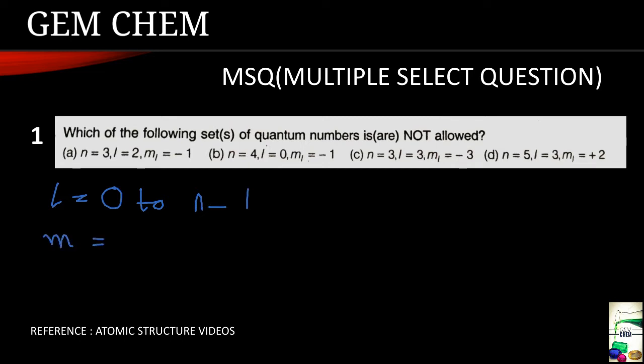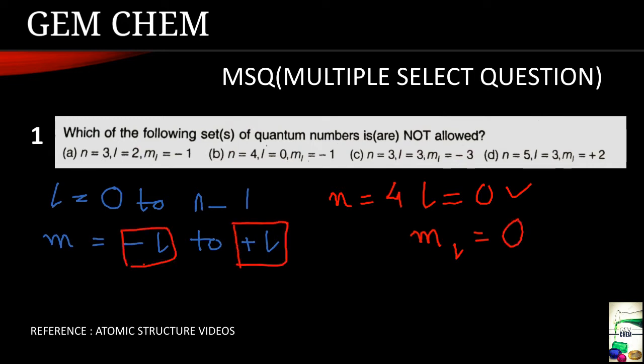And M must be equals to minus L to plus L. If we look carefully for the first case it is okay, N equals 3 so L can be 2 and ML can be minus 1. Whereas for the second case, N is given as 4 and L is given as 0 so L is okay, but if we come for the ML then it might be minus L or plus L so in this case only 0 is possible.